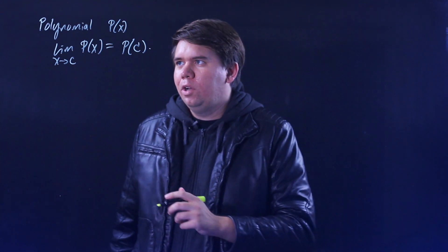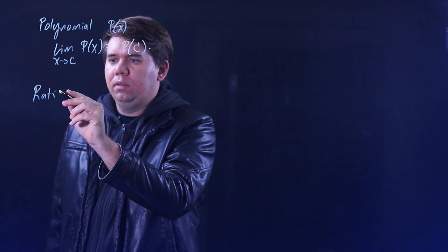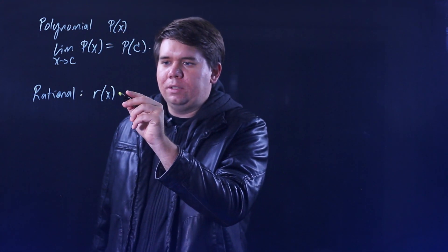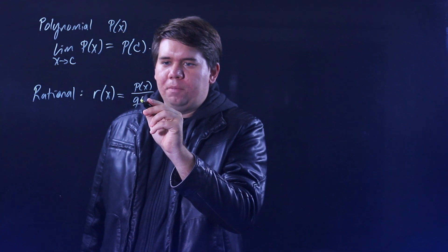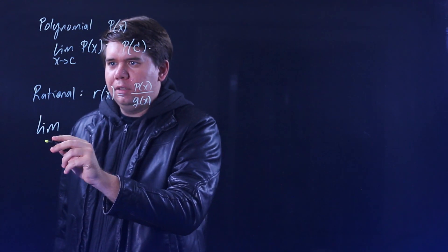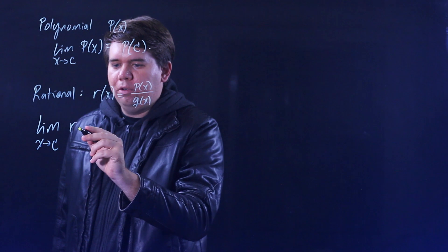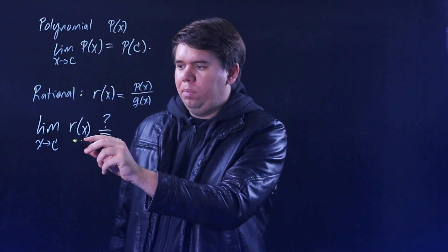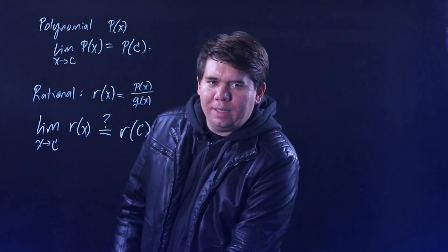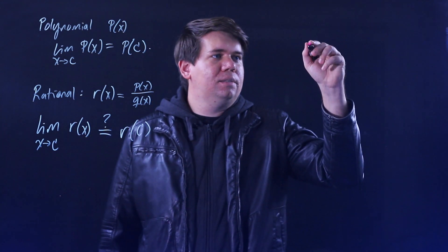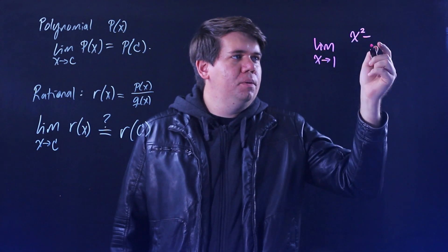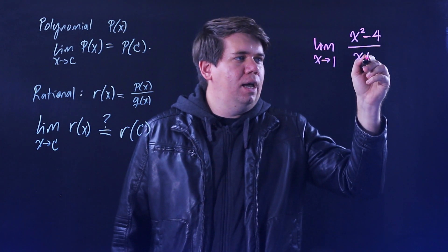For example, what if we have a rational function r of x? Remember, a rational function is just some polynomial on top divided by some other polynomial on the bottom. Are we able to also conclude that the limit as x approaches some constant c of a rational function is just going to be plugging c in? To examine this, let's look at a couple examples. The first example is the limit as x approaches 1 of x squared minus 4, all over x plus 2.